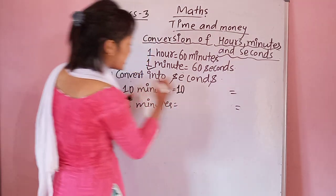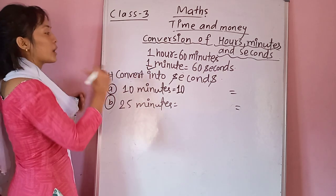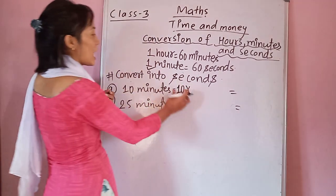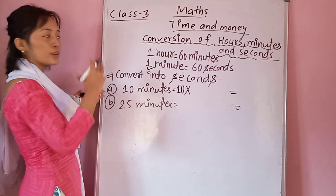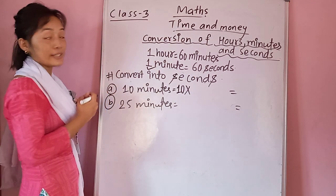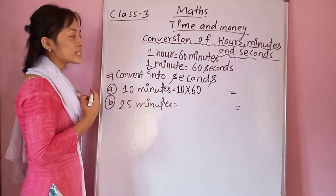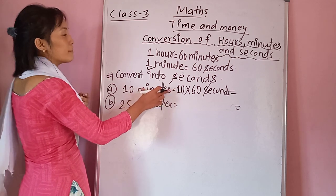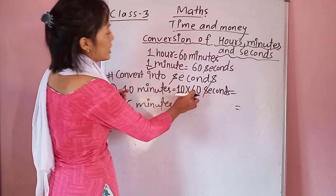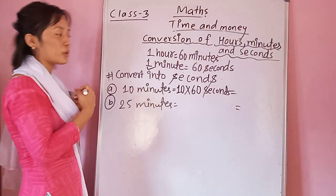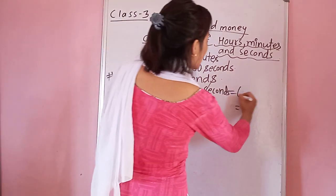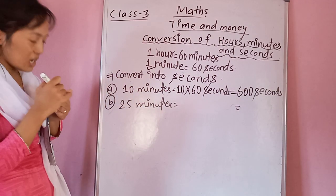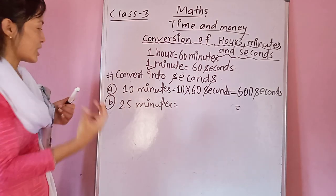Here it is written 10 minutes. Write 10 as it is, then apply the multiplication sign, and multiply by the relation between minute and second, which is 60. Write seconds as the unit. So 10 into 60 — when you multiply in your copy you will get 600 seconds. In 10 minutes there are altogether 600 seconds.